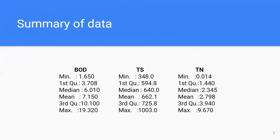Next, we have the summary of the data. We have our three variables here. For the BOD, we have the minimum, mean, and maximum values. Similarly for total solids and total nitrogen, we have the summary statistics for each.